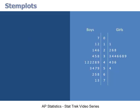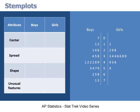This back-to-back stem plot shows the amount of cash carried by a random sample of teenage boys and girls. If you were asked to interpret this chart on a test, you would compare the boy data with the girl data based on center, spread, shape, and unusual features. The median of the boy data set is $42, shown in red on the boy side of the stem plot, and the median of the girl data set is $36, shown in red on the girl side. So based on this display, we would conclude that boys tend to carry more cash than girls.